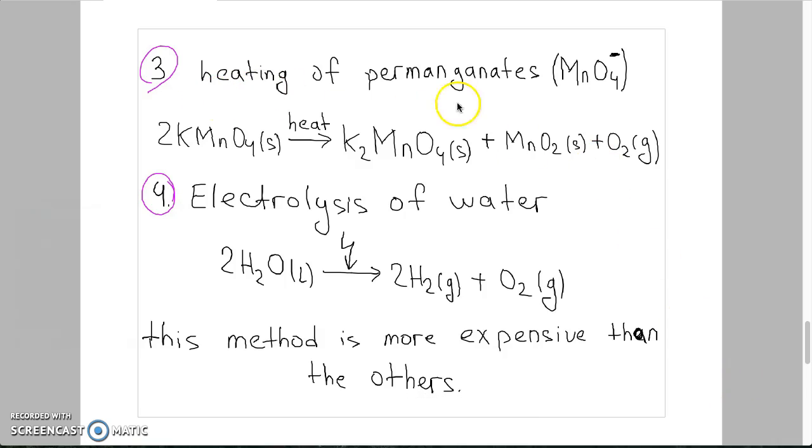Third is the heating of permanganates. If we heat permanganate, in products will also obtain oxygen gas.